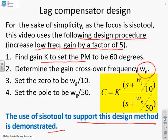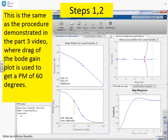Steps one and two: this is the same as the procedure demonstrated in the previous video, where we use drag on the Bode gain plot to get a phase margin of 60 degrees. We've already done that—there's our phase margin of 60 degrees. We've done that by simply dragging the gain plot up and down, and we get a gain of 1.65.